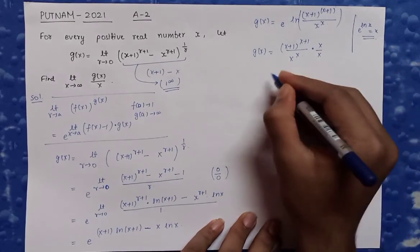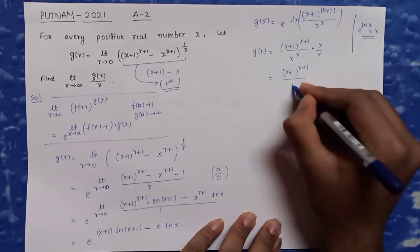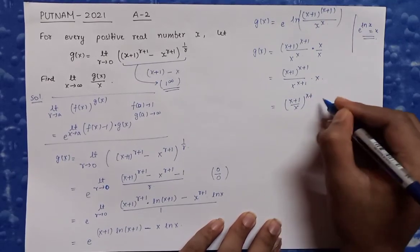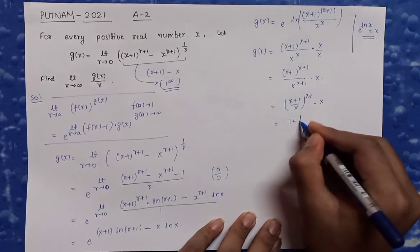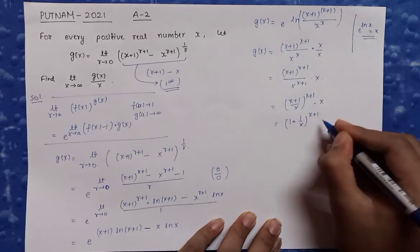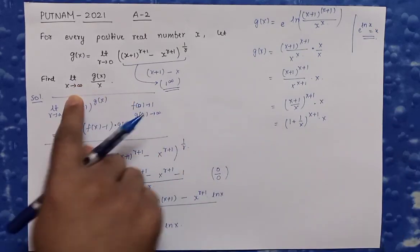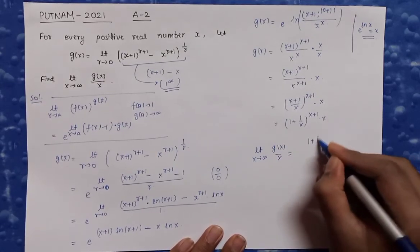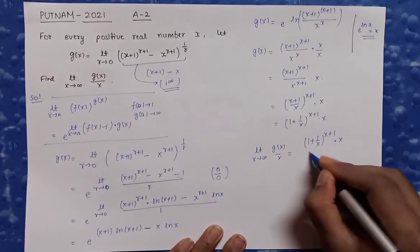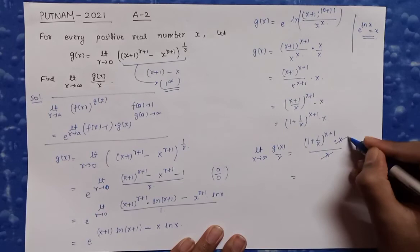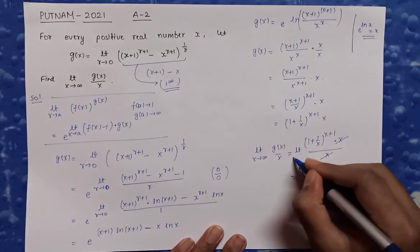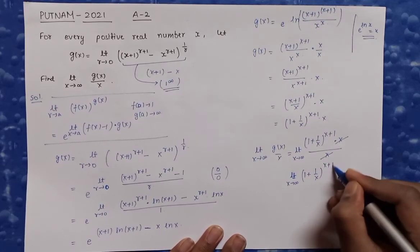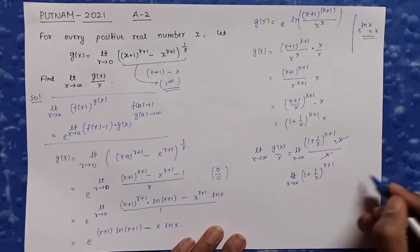Multiplying and dividing by x, we get g(x) = [(x+1)/x]^(x+1) × x = [1 + 1/x]^(x+1) × x. Now the limit we have to solve is: limit as x tends to infinity of g(x)/x = limit as x tends to infinity of [1 + 1/x]^(x+1). The x cancels, and this is once again the 1^∞ form.